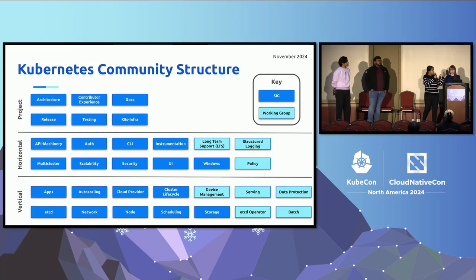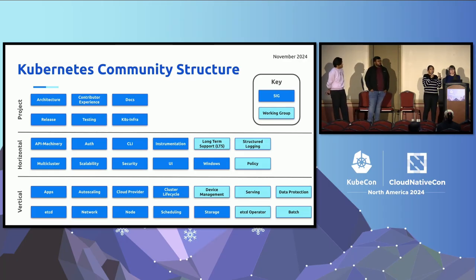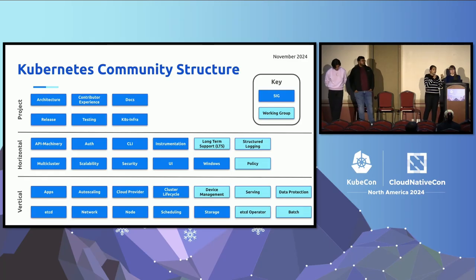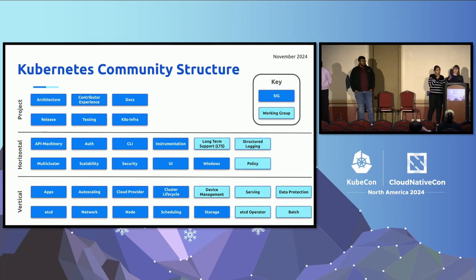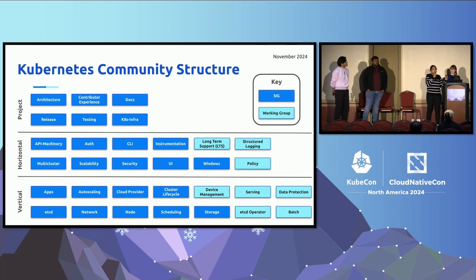Starting from the bottom, we have the vertical components — specific areas like node and storage. For example, everything related to nodes is handled by SIG Node; same for SIG Storage. Right above that, we have horizontal SIGs or working groups that span multiple components, like the LTS working group, the policy working group, or CLI. At the top, we have project-level SIGs that provide resources, infrastructure support, and handle releases — for example, SIG Release takes all the work from Kubernetes release cycles and builds releases and artifacts from that.